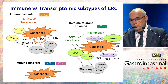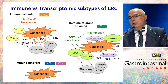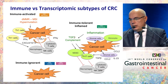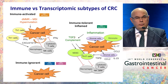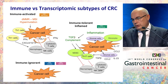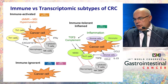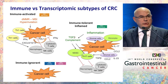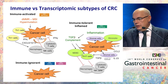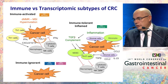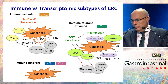The first population is CMS1, where hypermutation is a driver of these tumors, either by mismatch repair deficiency or other mechanisms. The immune cycle is activated from the beginning with neo-antigens, so TH1 cells and T cells infiltrate the tumors, followed by macrophages, NK cells, and CTLs. The only way the cancer cell can react is by upregulating PD-L1, which is why PD-1/PD-L1 inhibitors work in this population.